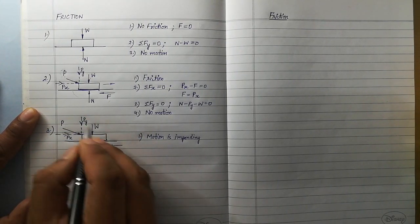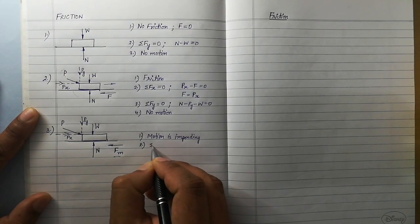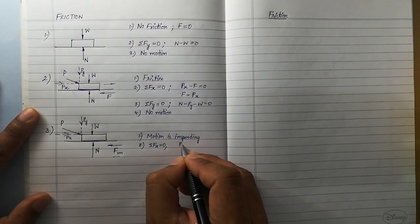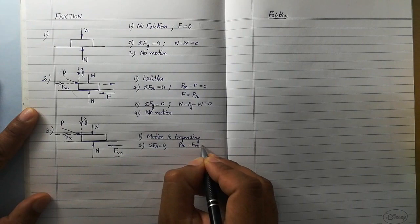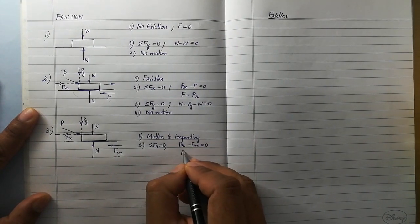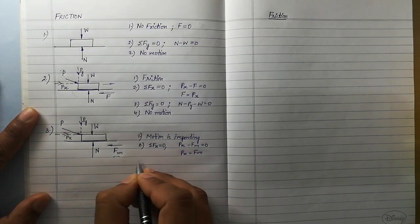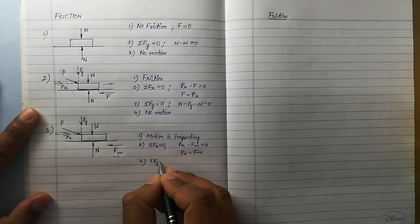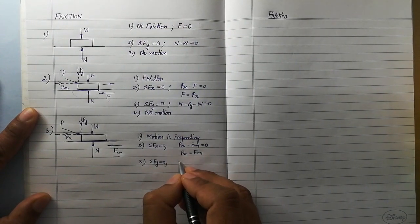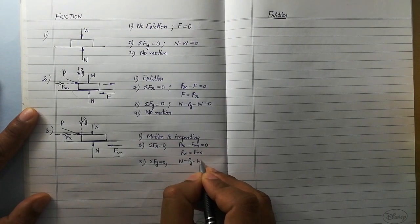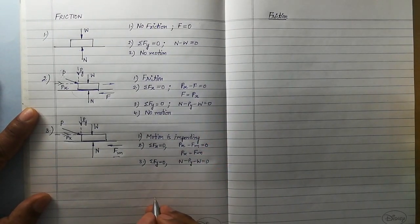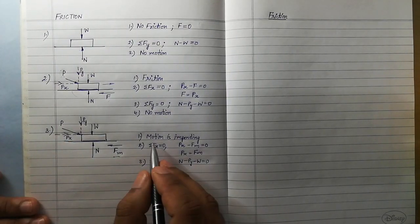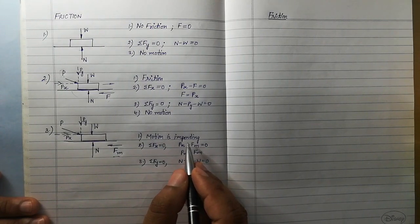In this case the body is still in equilibrium, so we can apply the equation: summation Fx equal to 0. This gives us Px minus Fm equal to 0, that is Px equals Fm (the limiting friction). The body is also not moving along the vertical direction, so summation Fy equal to 0 still applies, giving N minus Py minus W equal to 0. It is very important to understand that in this case motion is impending, but still there is no motion.